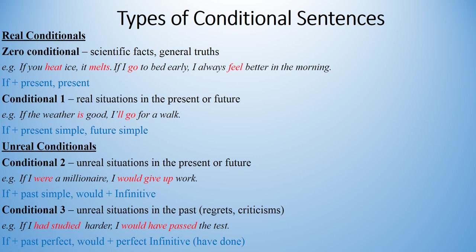Conditionals 1, or the first conditionals, describe situations which are likely to happen if the condition stated in the subordinate clause is fulfilled. They usually refer to the present or the future. For example, if the weather is good, I'll go for a walk. The formula is: if plus present simple, future simple. This means that we use the present simple in the if clause and the future simple in the main clause. You should be very careful because after 'if' we can only use the present simple, and the future simple goes in the main clause.